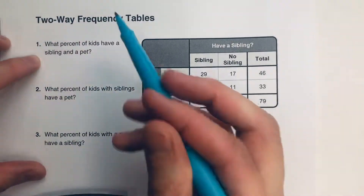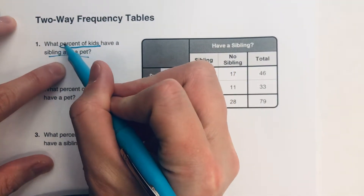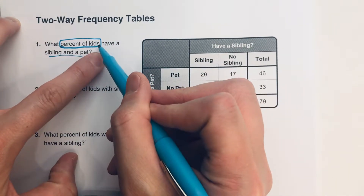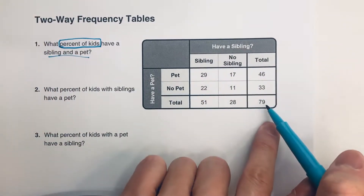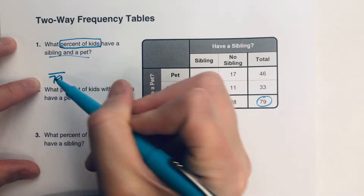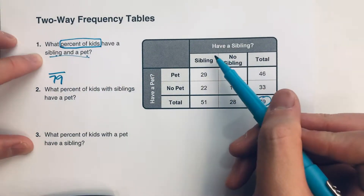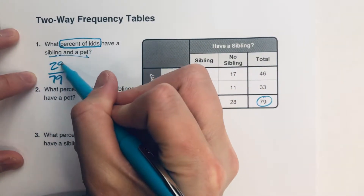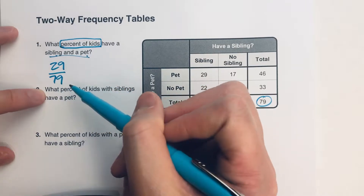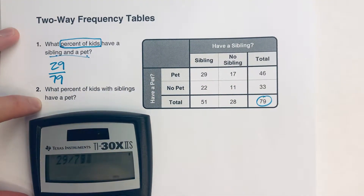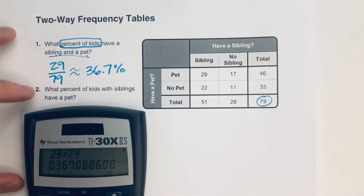For question one — what percent of kids have a sibling and a pet? — we want to know what percent of all the kids. That means all of the kids is the whole. There were a total of 79 kids surveyed, so that's the whole. The part is how many have both a sibling and a pet, which is 29. So 29 out of 79 gives us about 36.7%.